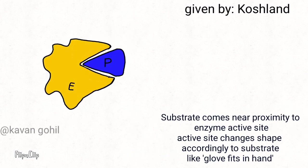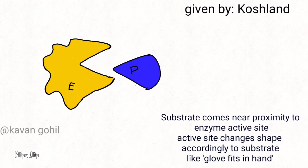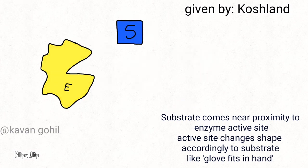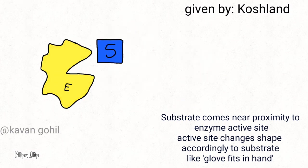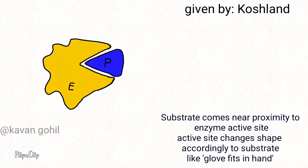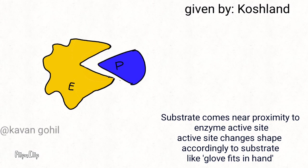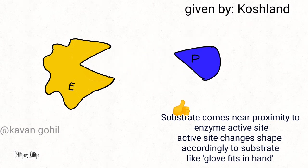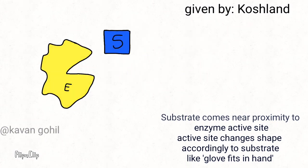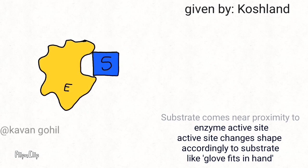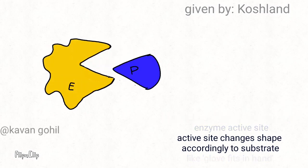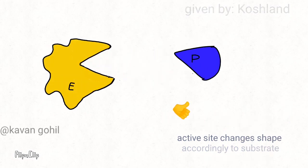In the induced fit model, the enzyme active site is initially not complementary to the substrate. But when the substrate comes near proximity to the active site, it changes its conformation. After induced fit, the enzyme converts the substrate into product. This model is similar to a hand fitting into a glove, as the glove adjusts according to the size and shape of the hand.